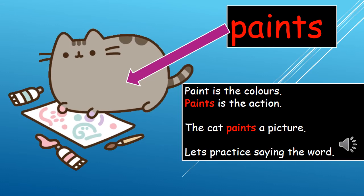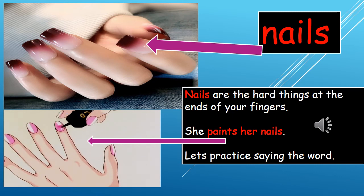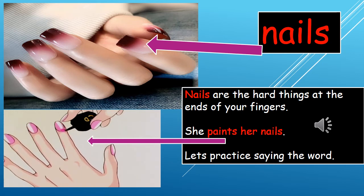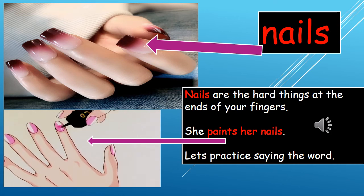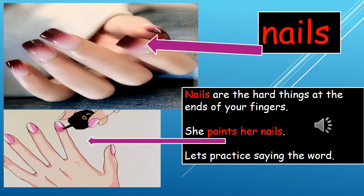Let's practice saying it out loud: paints. Remember, I want to hear that S at the end — paints. If a mosquito bites you, it is really nice to scratch with your nails. In our picture at the bottom, let's look at the example: she paints her nails. That means she's using pretty colors and painting them on her nails to make them look beautiful. Let's practice this one: nails. Let's practice the sentence: she paints her nails.